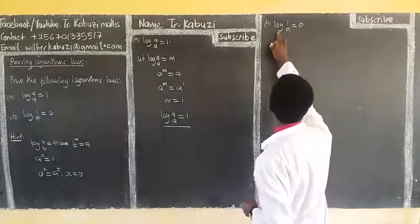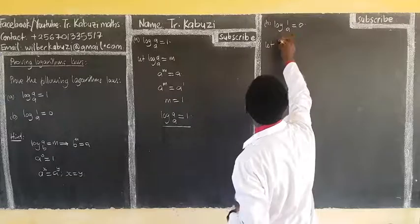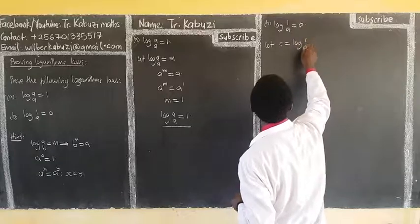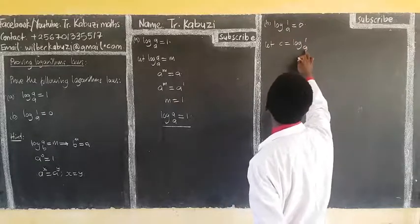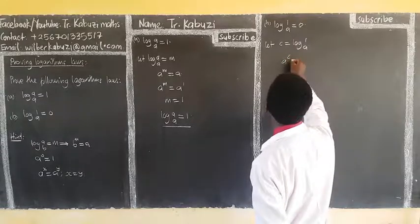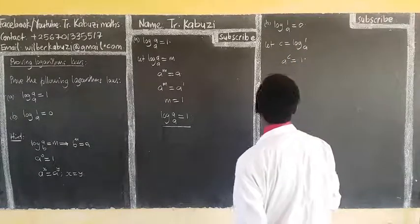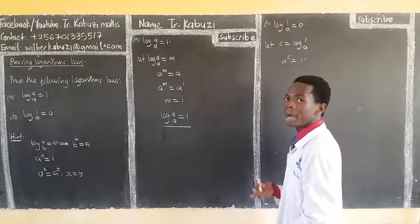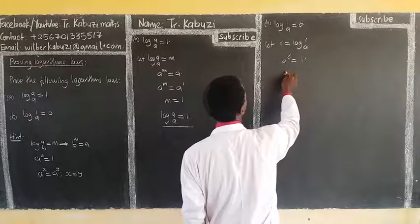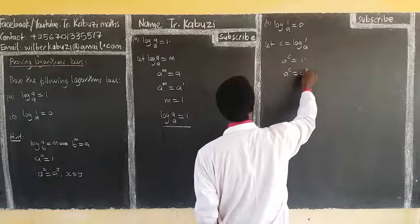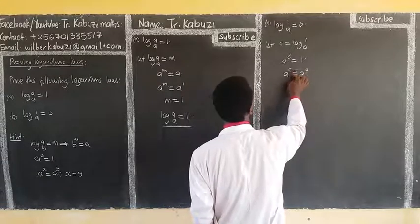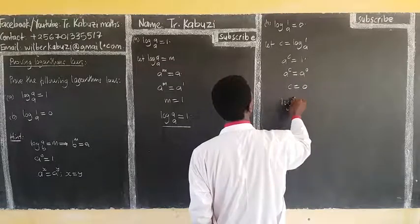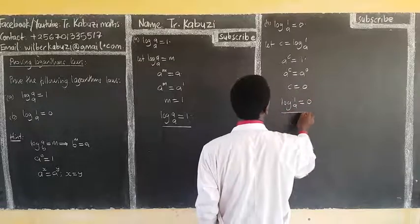When it comes to this second law, the same idea. Let C be log of 1 to base A, the left hand side. Then it means A power C will be equal to 1. But remember, we can convert 1 to any base — because A to the power 0 equals 1. So this gives A power C equal to A power 0. Numbers of the same base means the powers are equal, so C equals 0. Therefore log of 1 to base A is equal to 0.